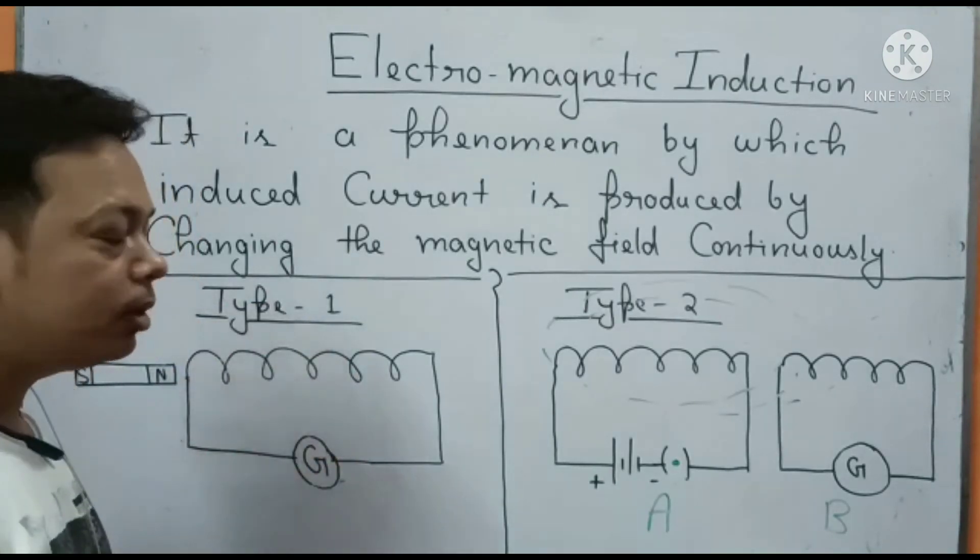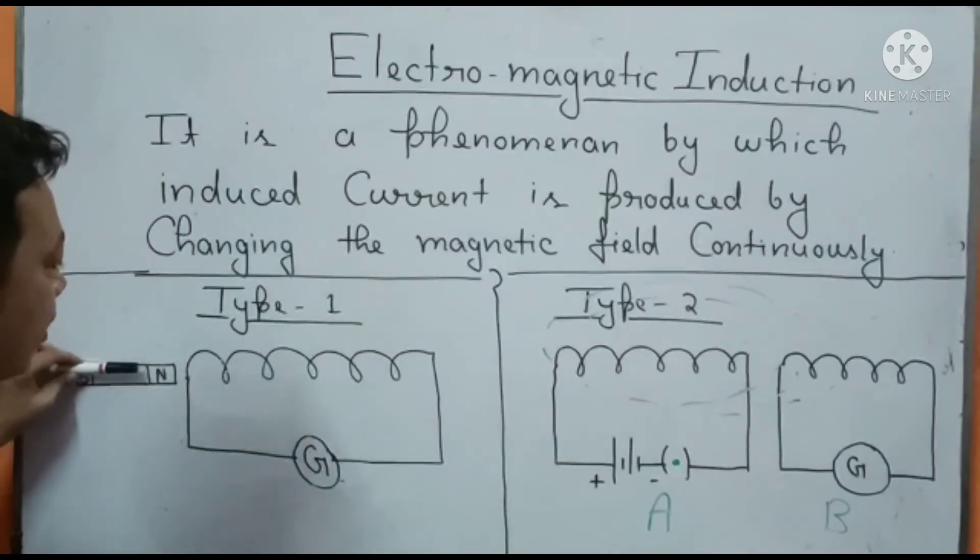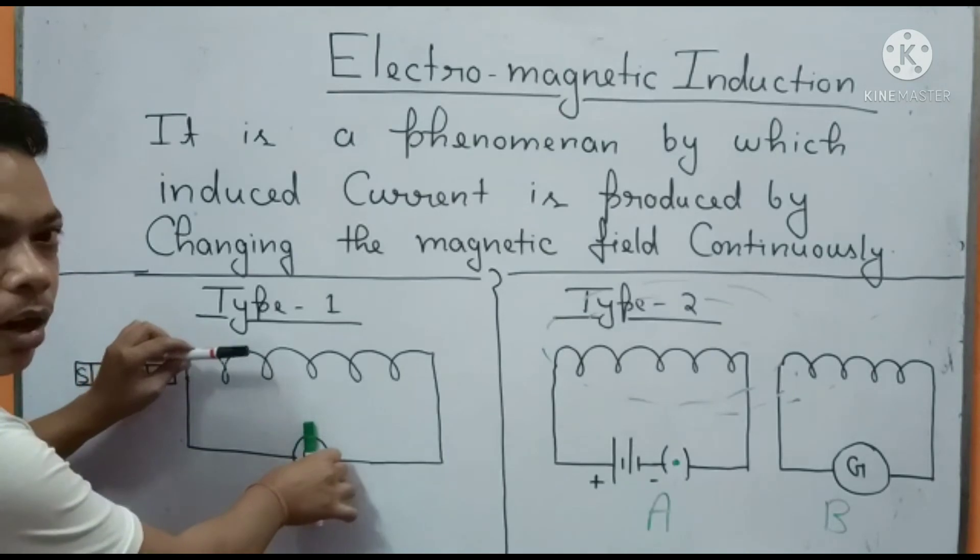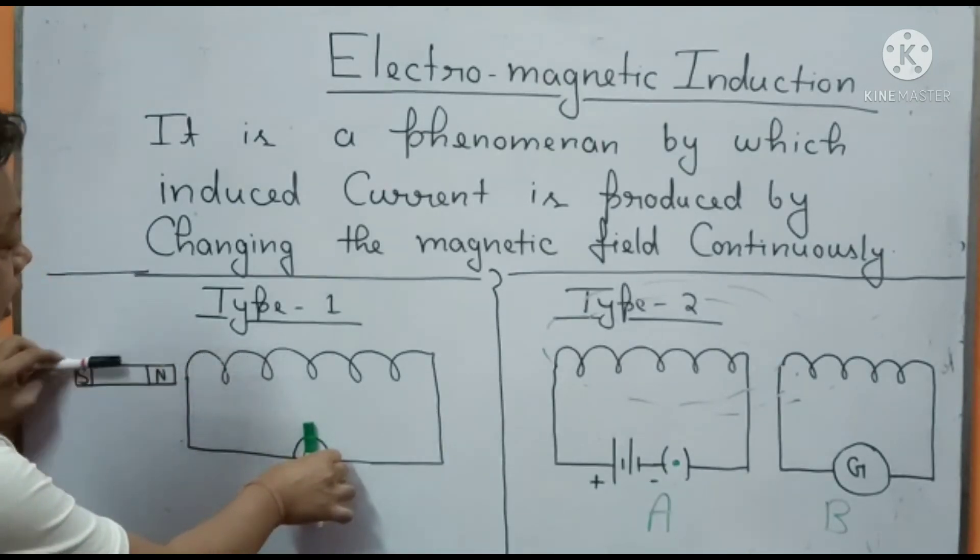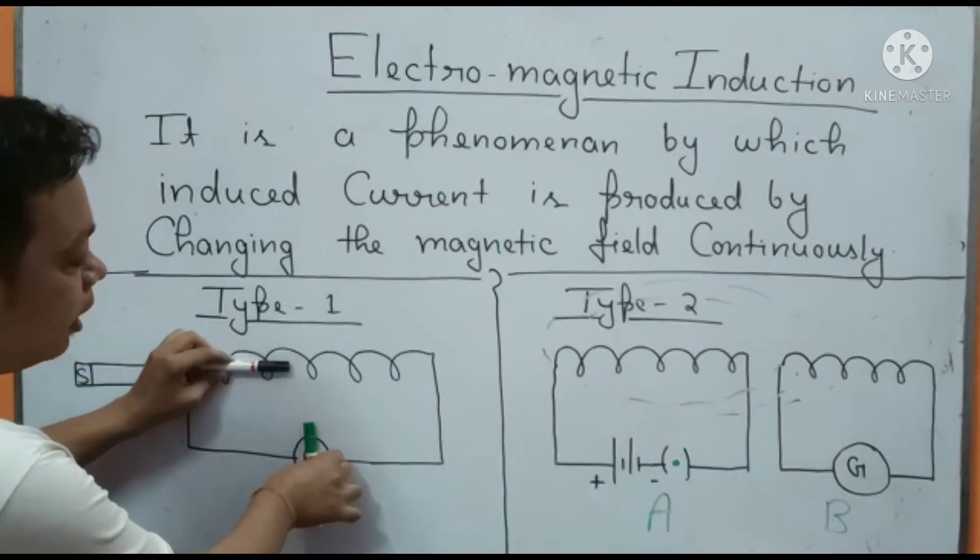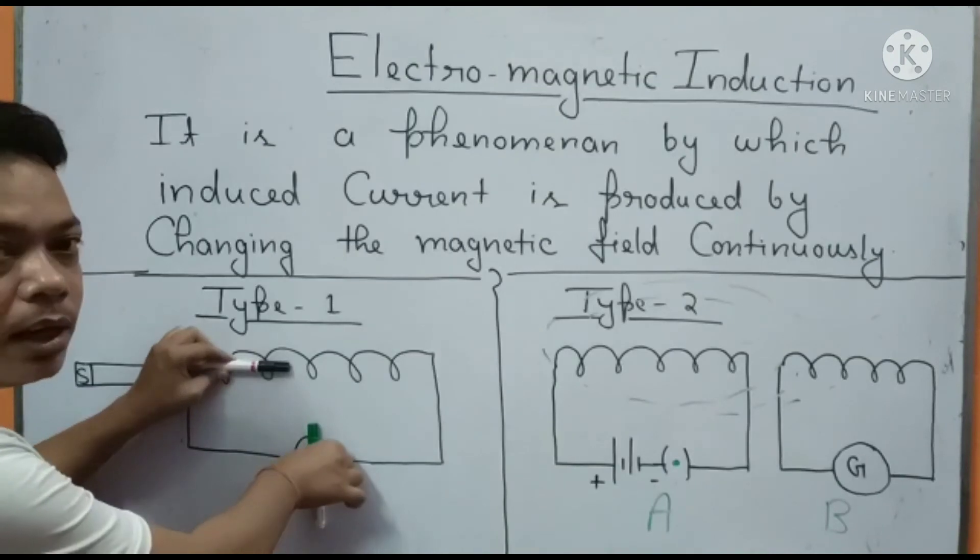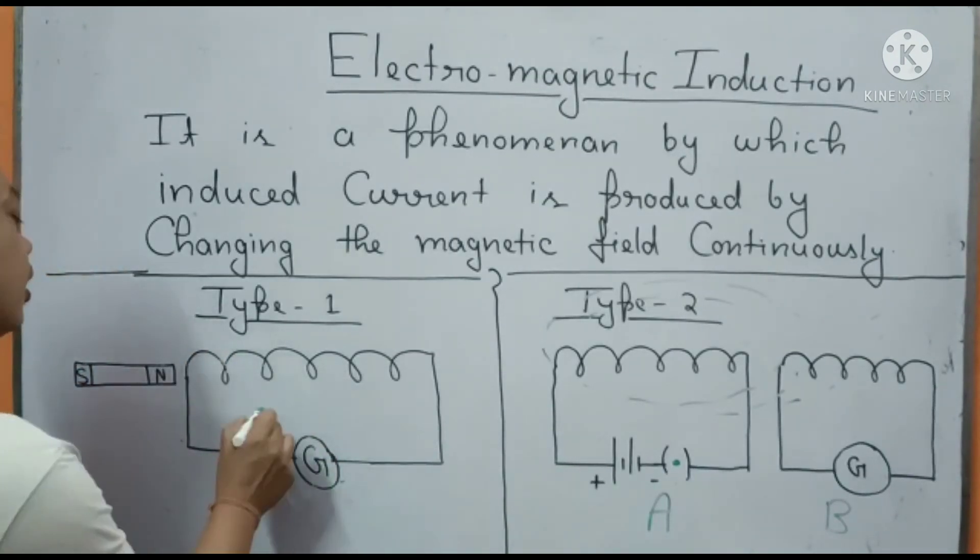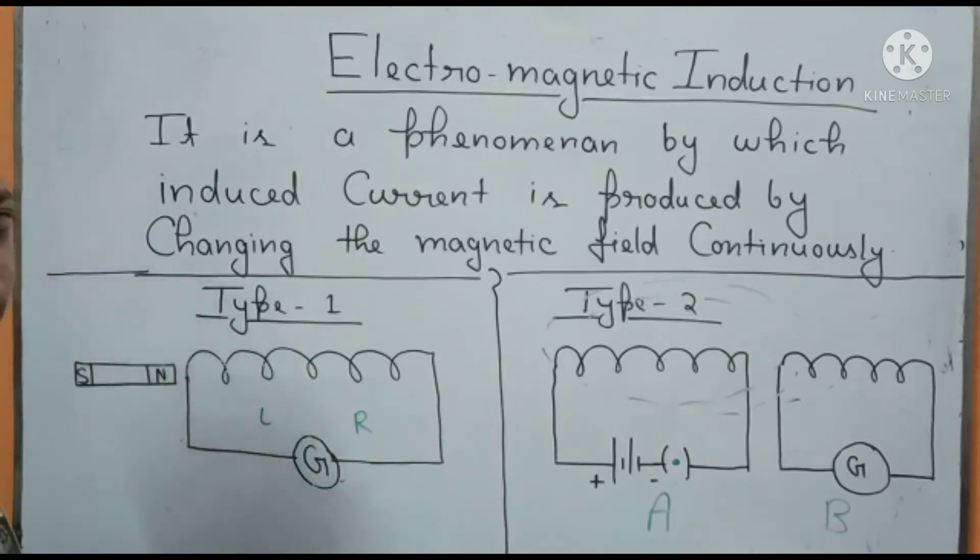The second question asks: what will happen when you insert it? Will the galvanometer needle deflect or not? As you insert the magnet, the galvanometer needle will deflect. Now the question is in which direction - left direction or right direction?